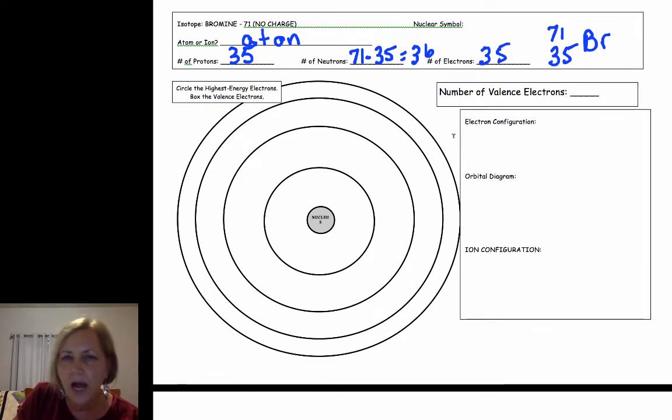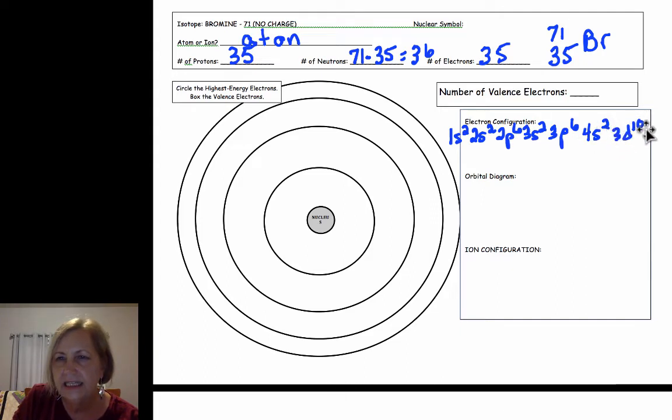Bromine's electron configuration would be 1s2 2s2 2p6 3s2 3p6 4s2 3d10 4p5. You can always add up those superscripts and make sure you've got the right configuration.